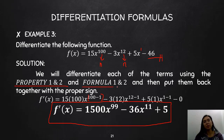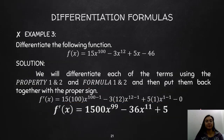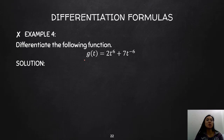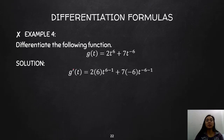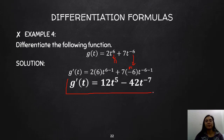Let's look at another example: differentiate g(t) = 2t^6 + 7t^(−6). Getting the first derivative: 2·6·t^(6−1) = 12t^5, and for 7t^(−6), n is negative 6, so that's 7·(−6)·t^(−6−1) = −42t^(−7). So g′(t) = 12t^5 − 42t^(−7).